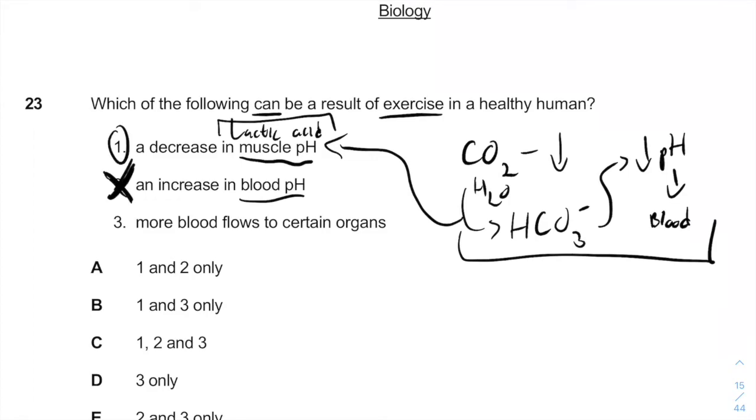More blood will flow to certain organs due to the very basic physiologic explanation that when muscles respire, they need more oxygen and therefore the heart and the blood will flow and beat faster in order to provide this oxygen to the different muscle tissues. And therefore, 1 and 3 are correct and B is the answer. I'll see you next time.